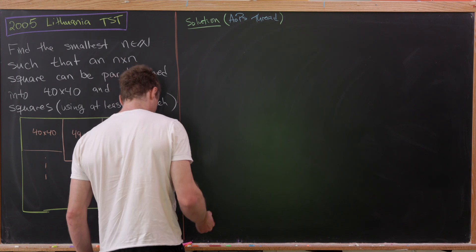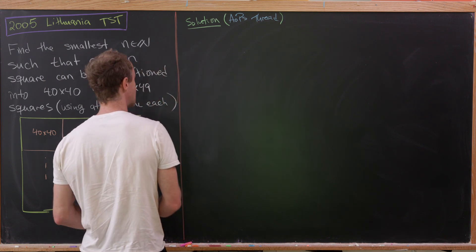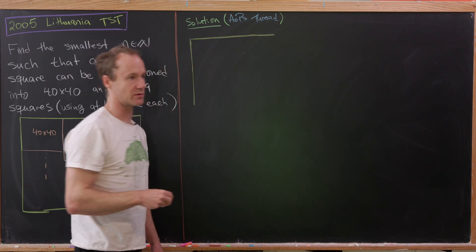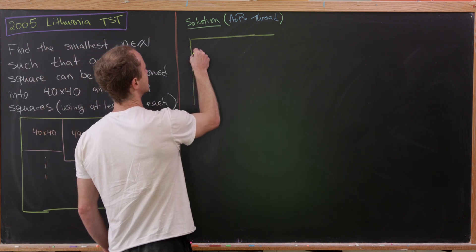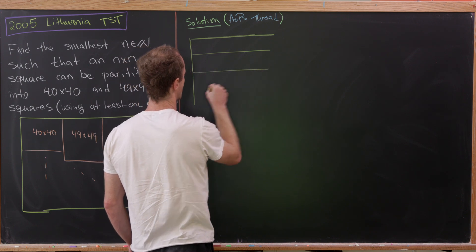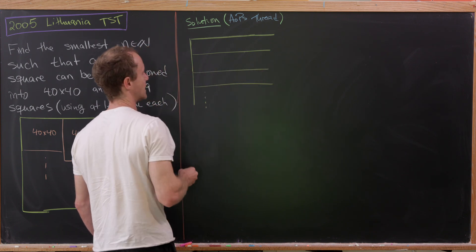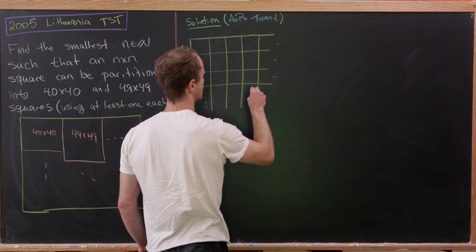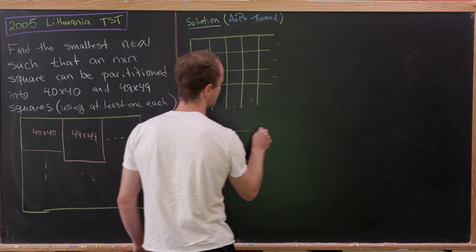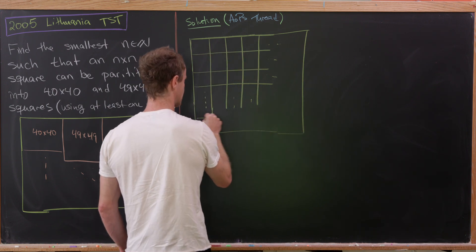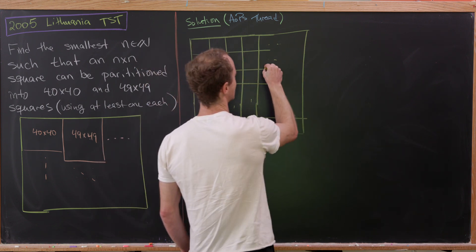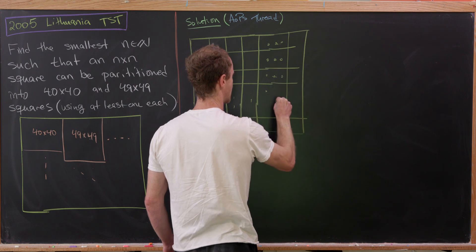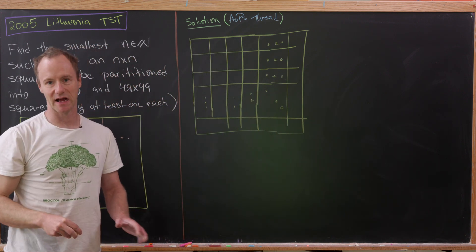I'm going to start by sketching out our n by n square. Obviously we can't draw an exact n by n square since n is an arbitrary natural number we're solving for, but we can get an idea of what's going on just by looking at a mock up. So we've got our n by n square broken up like this — I'll do the first few rows and columns, and also a last row and last column.